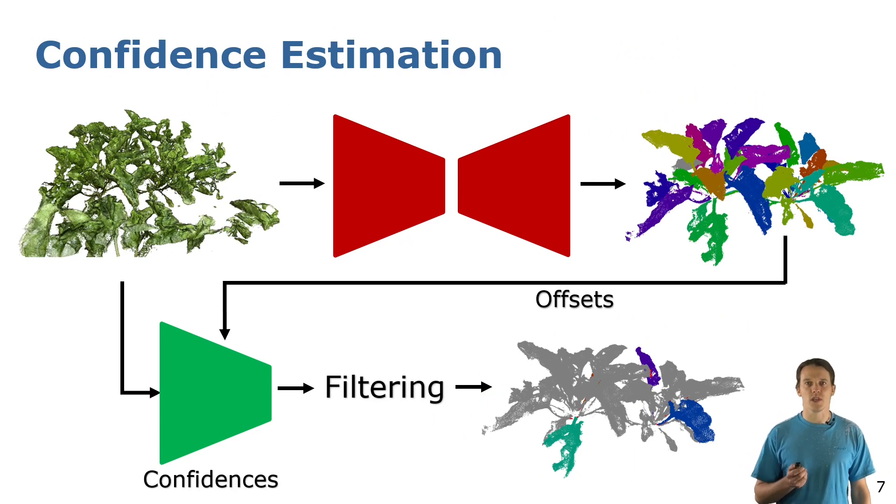To detect the best leaves to keep, we added another encoder shown here in green that takes as input the original point cloud and the predicted instances and outputs a confidence score for each leaf instance. We can then use these confidences to filter the predictions.